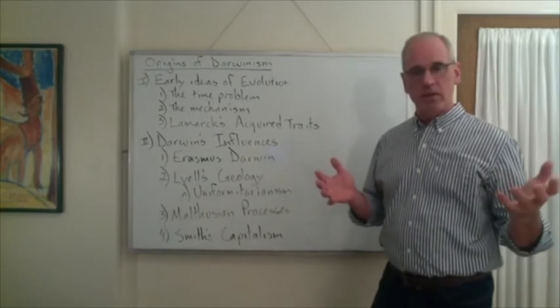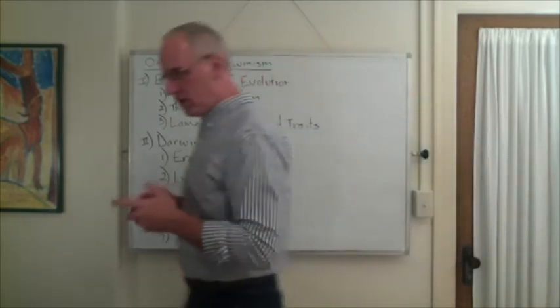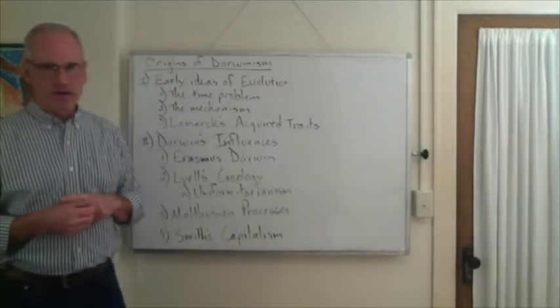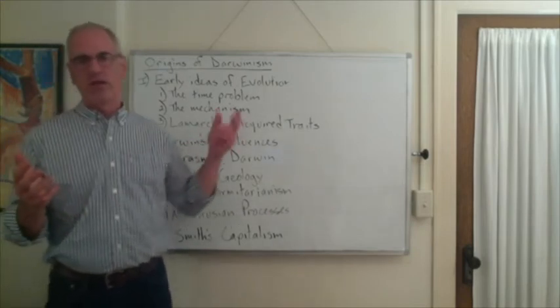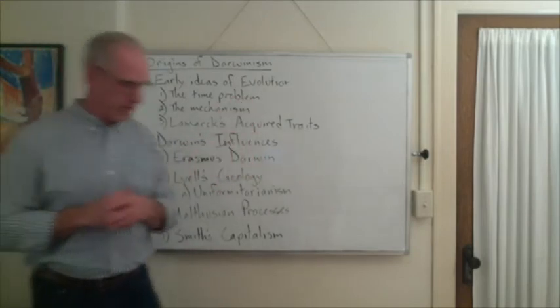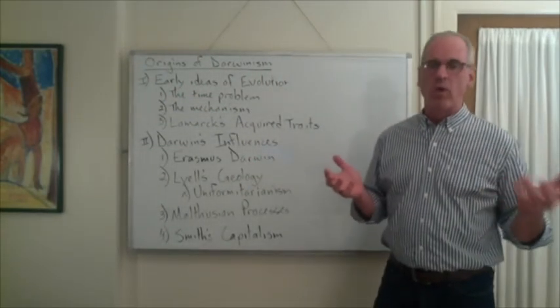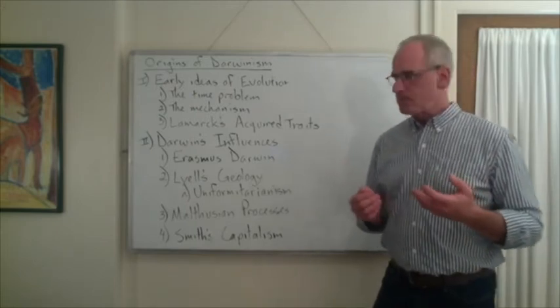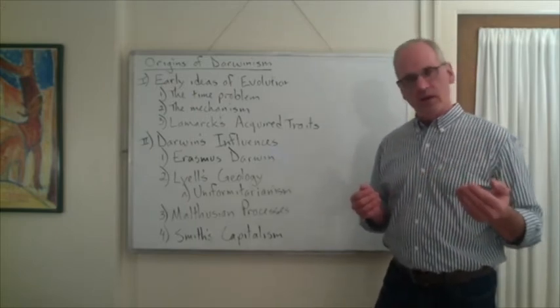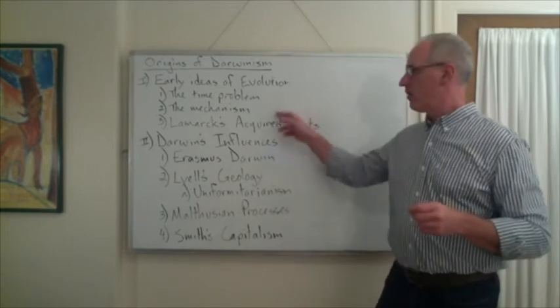But it remained that nobody had the mechanism and the time problem was still there. Darwin is reading all these debates - Diderot, Holbach. Darwin was aware of a lot of this. He came from a very educated family.